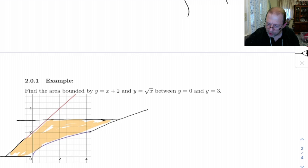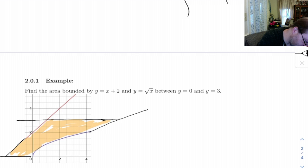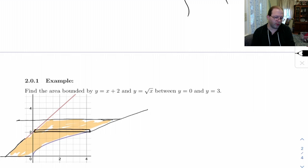So notice, anywhere we draw a horizontal rectangle on this, anywhere we draw a horizontal rectangle, it's got one end on the parabola and one end on the line. So, let's see, the right, the parabola is over here.